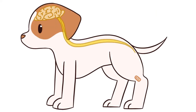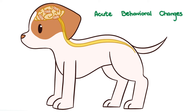The virus continues to spread from peripheral nerve to nerve, then to the spinal cord and eventually to the brain. In the brain, it replicates extensively, resulting in acute behavioral changes. These behavioral changes vary widely and are broadly classified under two forms: the furious and dumb form.